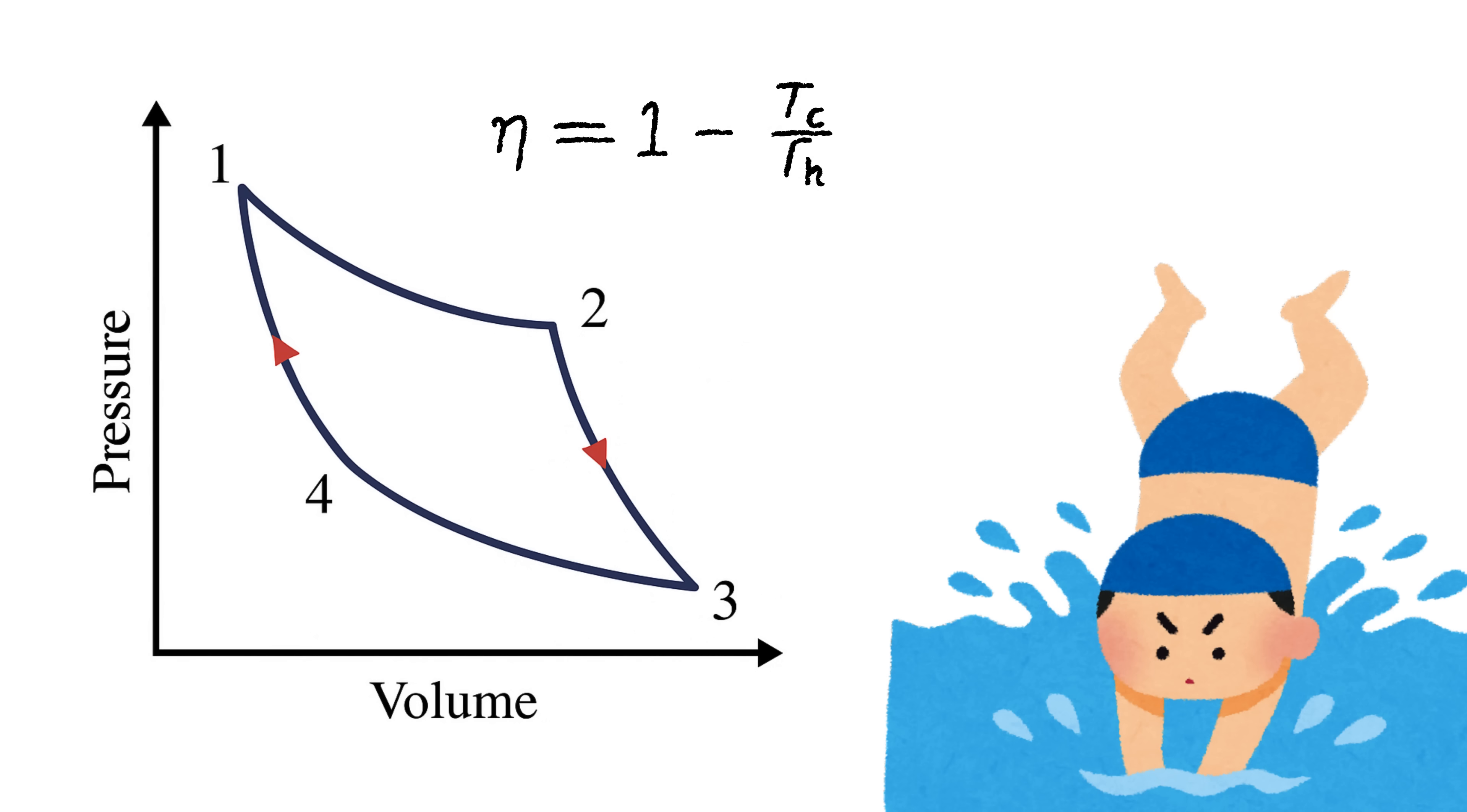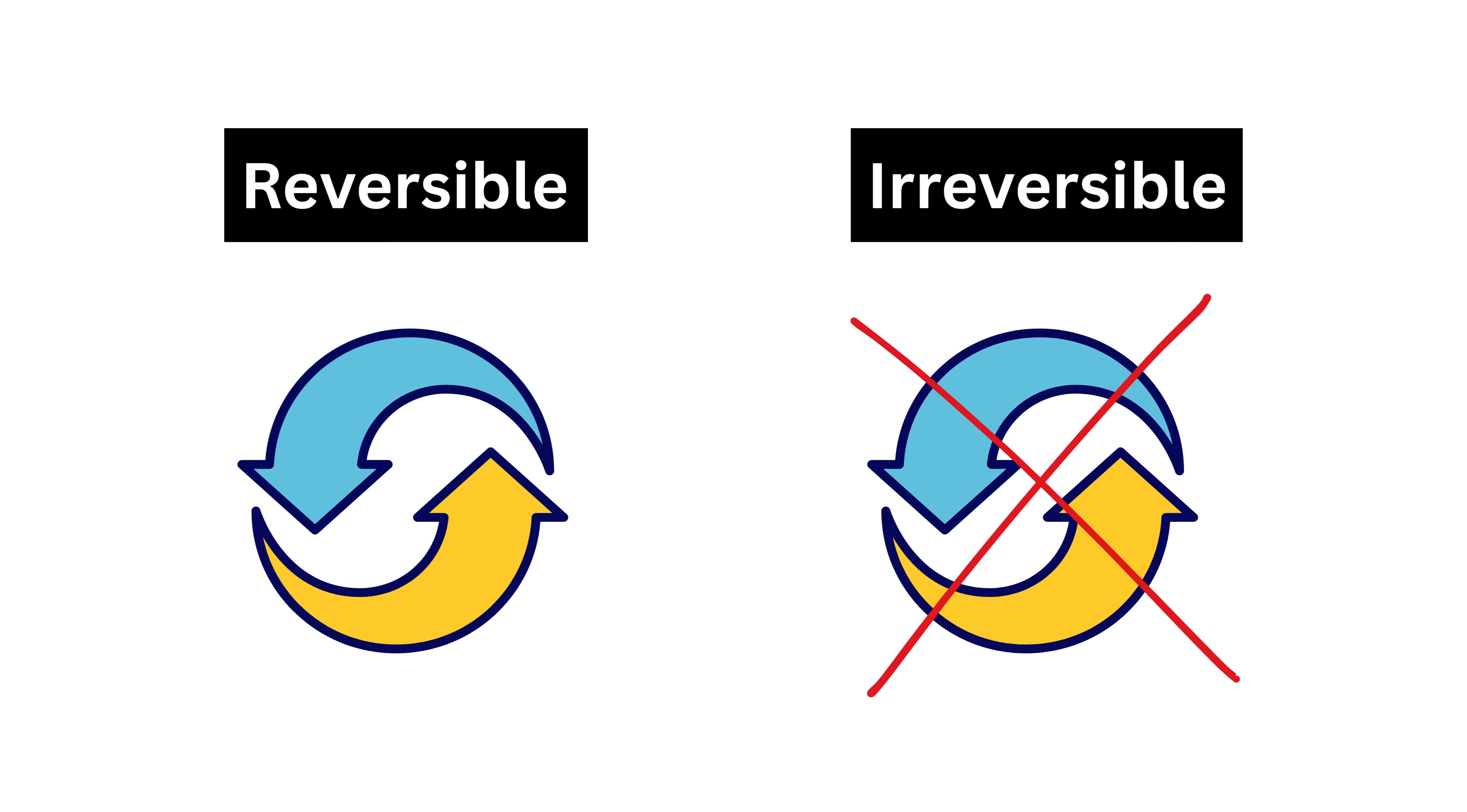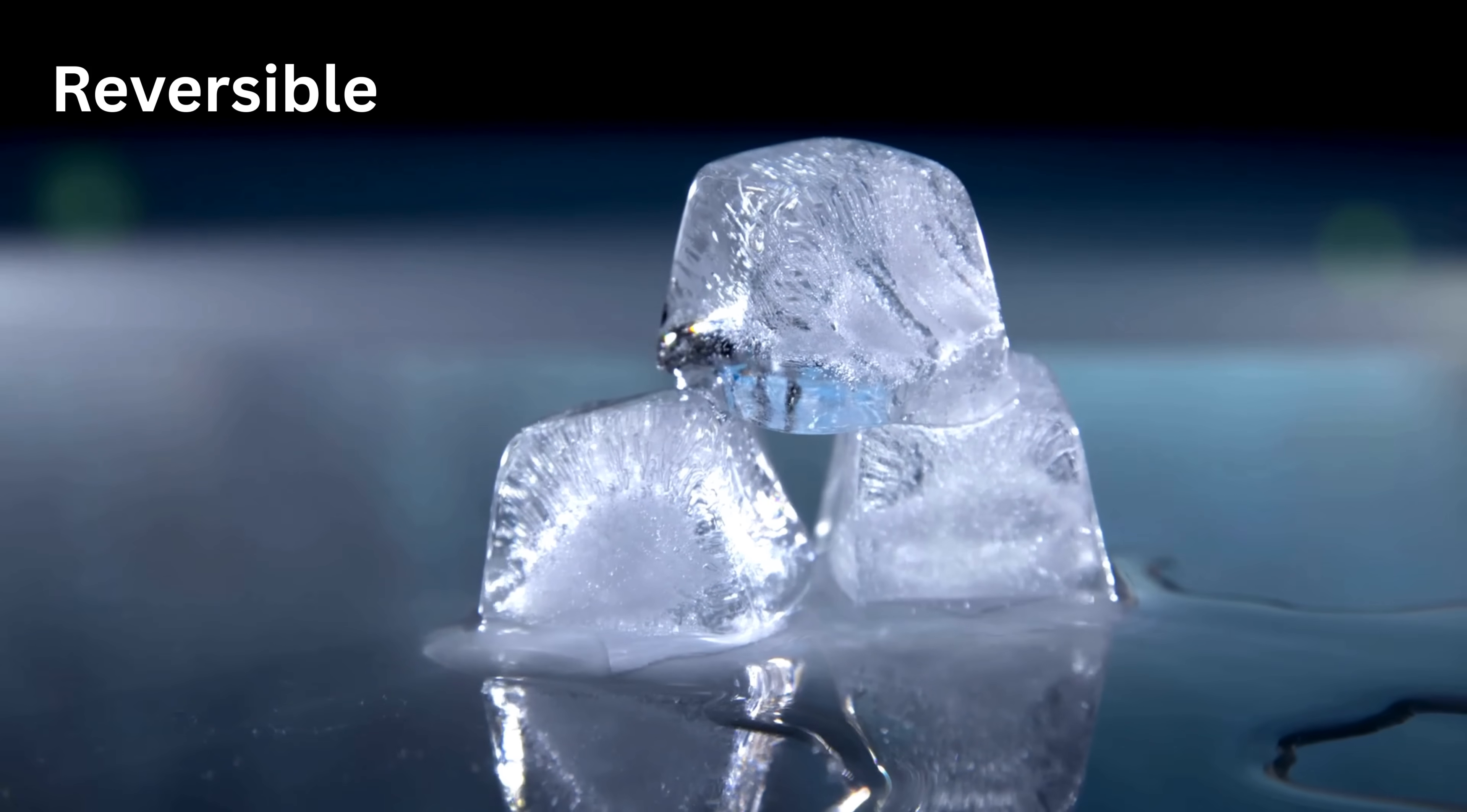Before we dive into the Carnot cycle, it's important to understand the difference between reversible and irreversible processes. A reversible process is like an ideal, perfectly smooth operation.